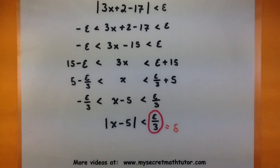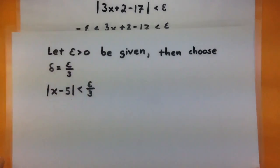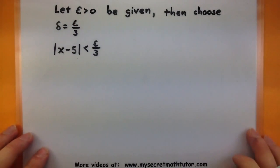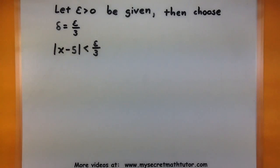So the last part of this is actually writing out the proof now that we know our delta. So to do that, we start off with this terminology. We say, let epsilon greater than 0 be given to us. Then we need to choose delta to be epsilon over 3.